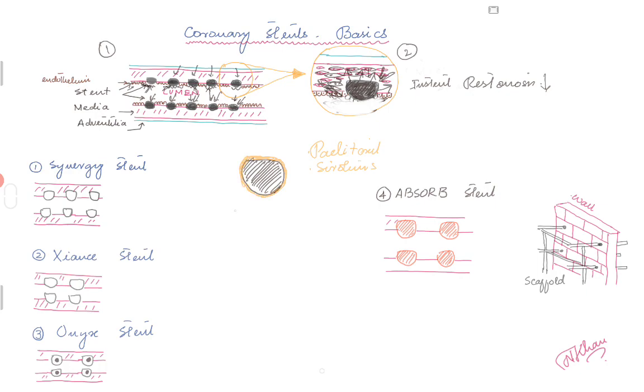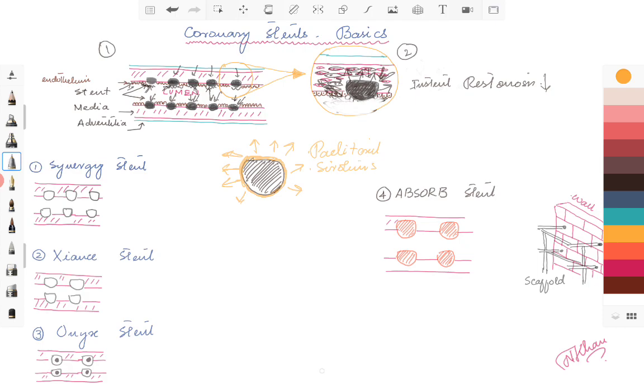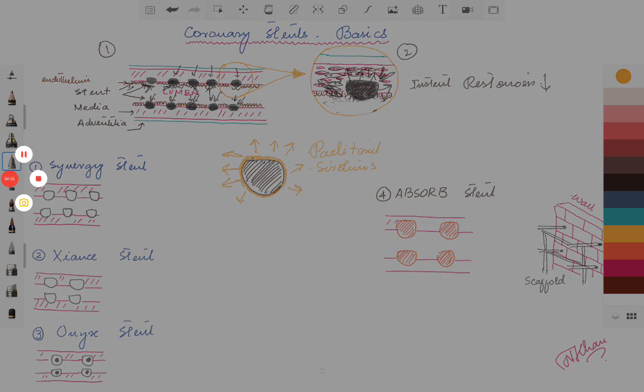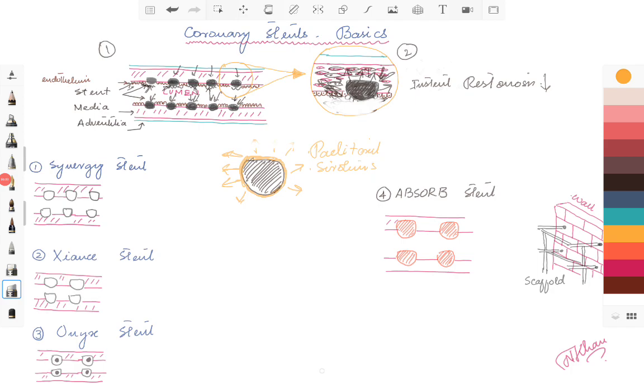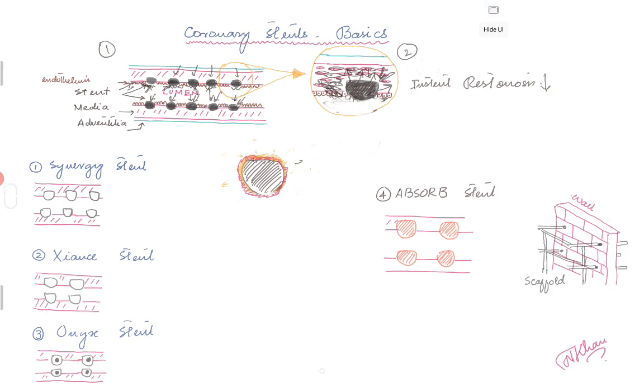The problem with the first and second generation stents was once you coat these stents with these drugs, they would just quickly release into the arterial media and lumen. With this came a concept of having a polymer.